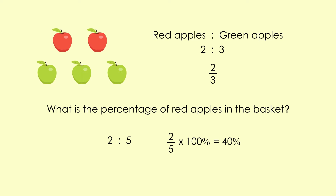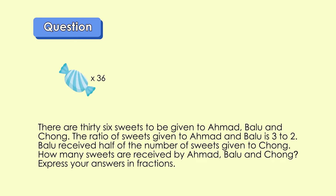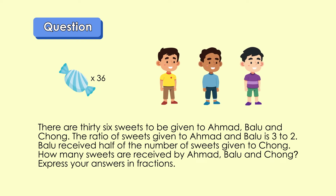So, pupils, let's look at this question to understand more on the relationship between percentages and ratio. There are 36 sweets to be given to Ahmad, Balu, and Chong. The ratio of sweets given to Ahmad and Balu is three to two. Balu received half of the number of sweets given to Chong. How many sweets are received by Ahmad, Balu, and Chong?